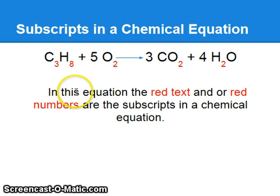Subscripts in a chemical equation. In this equation, the red text and/or red numbers are the subscripts. For example, C would have 3, H would have 8, O would have 2, C would have 1, O would have 2, H would have 2, and O would have 1.